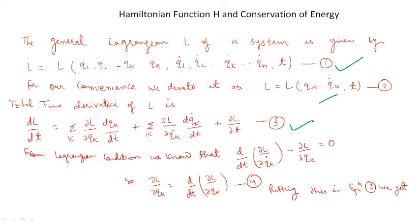From the Lagrangian condition, we know that d/dT(∂L/∂Qk-dot) − ∂L/∂Qk = 0. So here we can find the value of ∂L/∂Qk, and it will be equal to d/dT(∂L/∂Qk-dot). Let us call this equation 4.